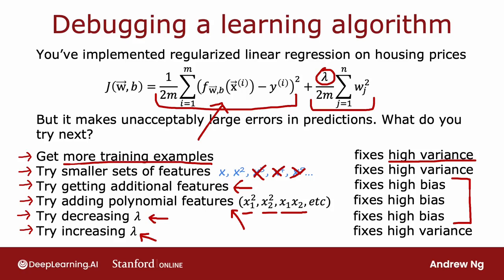By the way, in case you're wondering if you should fix high bias by reducing the training set size, that doesn't actually help. If you reduce the training set size, you will fit the training set better, but that tends to worsen your cross-validation error and the performance of your learning algorithm. So don't randomly throw away training examples just to try to fix a high bias problem.